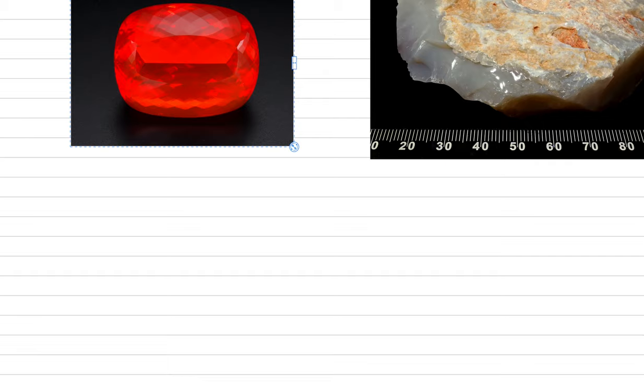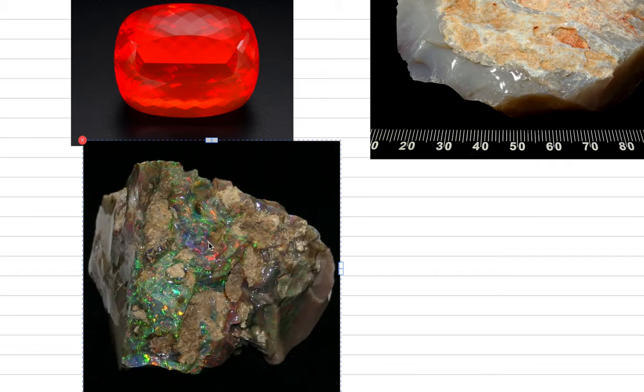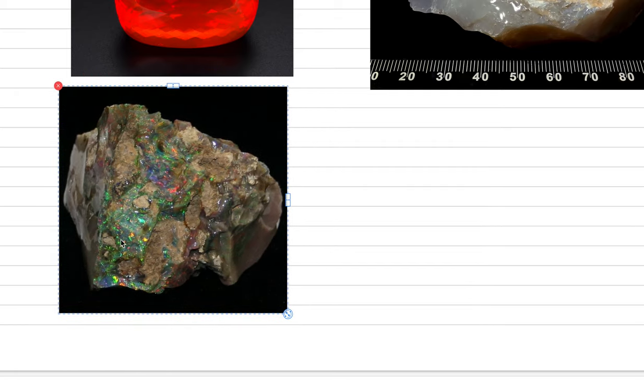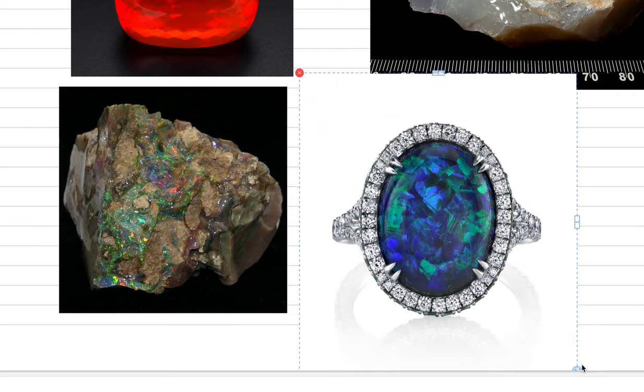Let's take a look at, here's a boulder opal from Montana, from Nevada. This is a place in the United States where you can find opal. And you can see the opals occurring within pockets within this matrix.